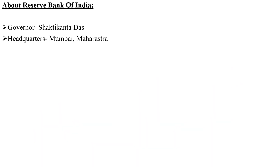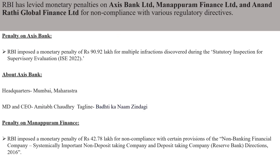About the Reserve Bank of India: the Governor is Shaktikanta Das and its headquarter is in Mumbai, Maharashtra. Now we are going to see about penalties. RBI has put penalties on Axis Bank Limited, Muthoot Finance Limited — sorry, Manappuram Finance Limited — and Anand Rathi Global Finance Limited. We will see the reasons why they have put a penalty and how much the penalty is.